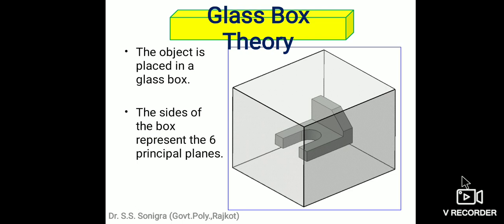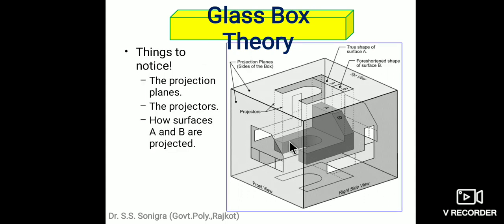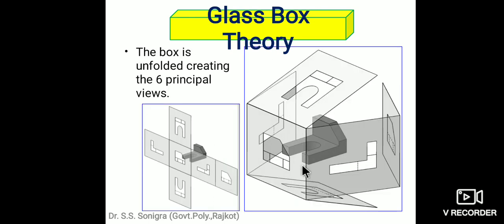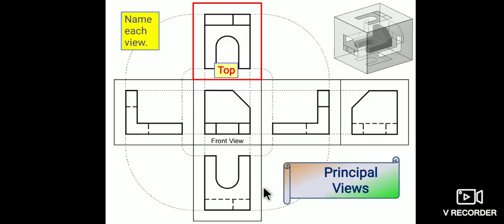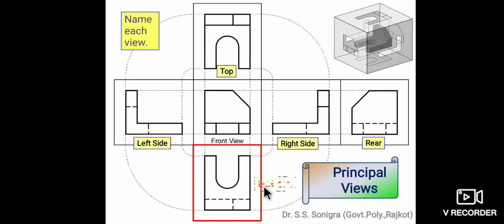Another object is placed in a glass box. The sides of the box represent the six principal planes — one, two, three, four, five, and six: front, rear, top, bottom, and two sides. The images of the object are projected on the sides of the box, then the box is opened to show six views. These six principal views are: top view, right-hand side view, rear view, left-hand side view, and bottom view.